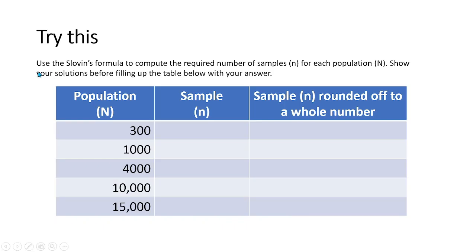So try this. Use Slovin's formula to compute the required number of samples for each population. Show your solutions before filling up the table below with your answer. We have here the populations: 300, 1,000, 4,000, 10,000, and 15,000.